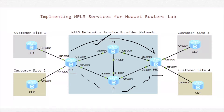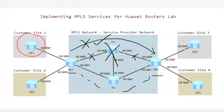What if there is a failure over the selected path? If we encounter any failure on the link between PE1 to P1, or the link between P1 to PE2, or if device P1 goes down entirely, the LDP LSP path via P1 will not be available.